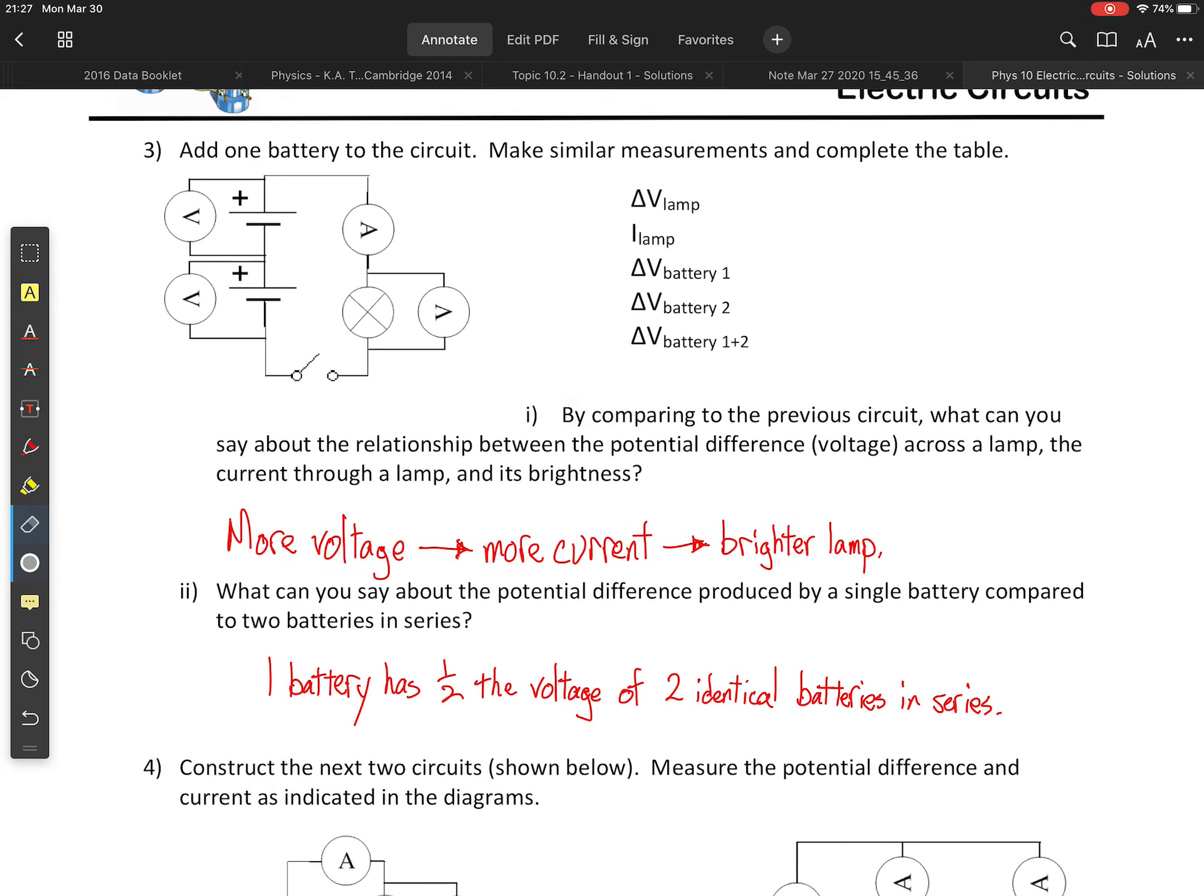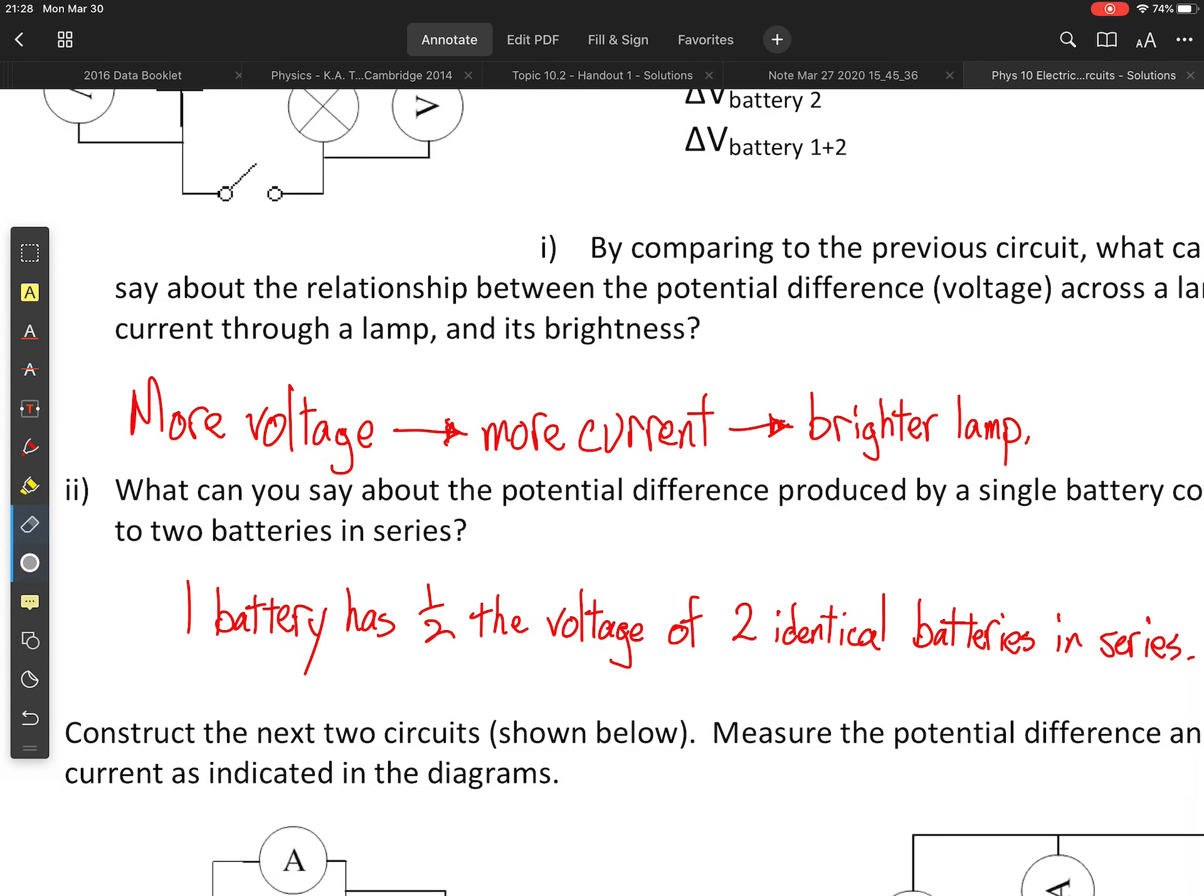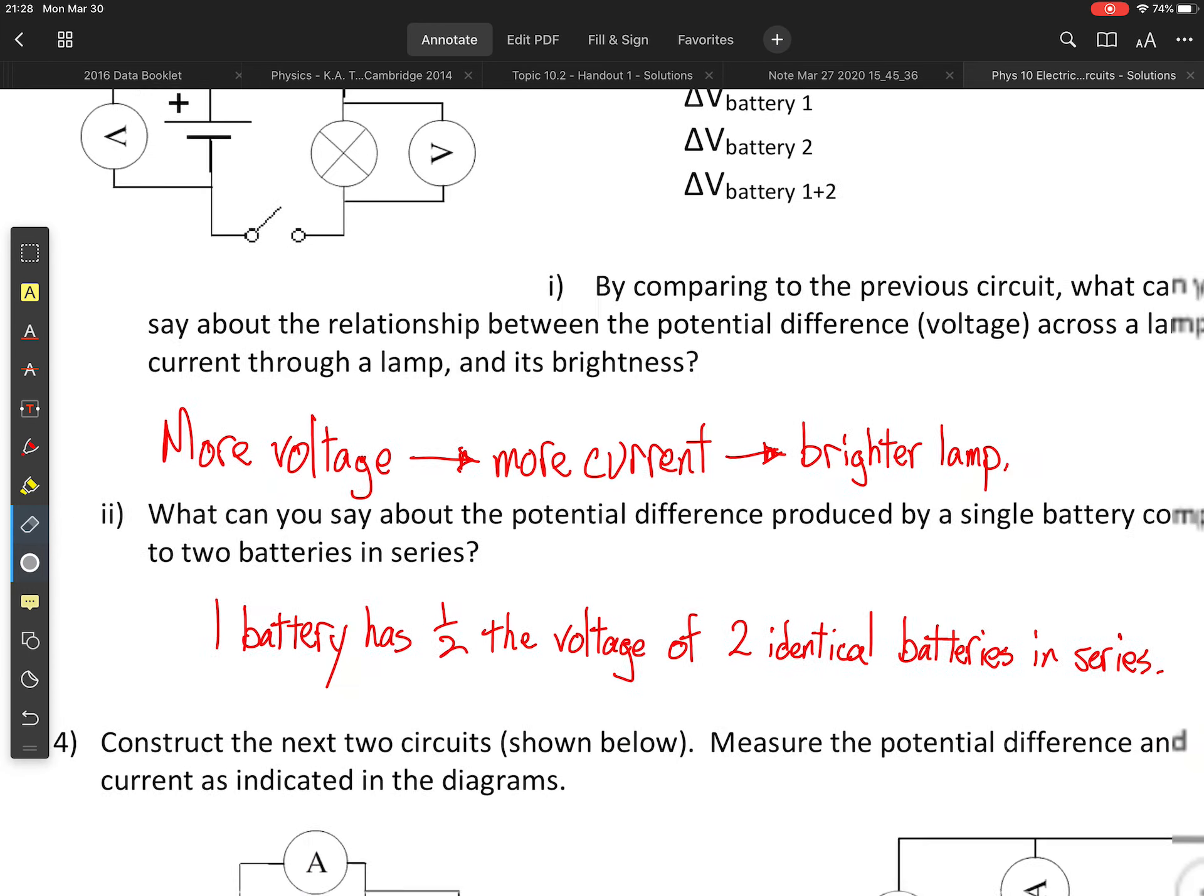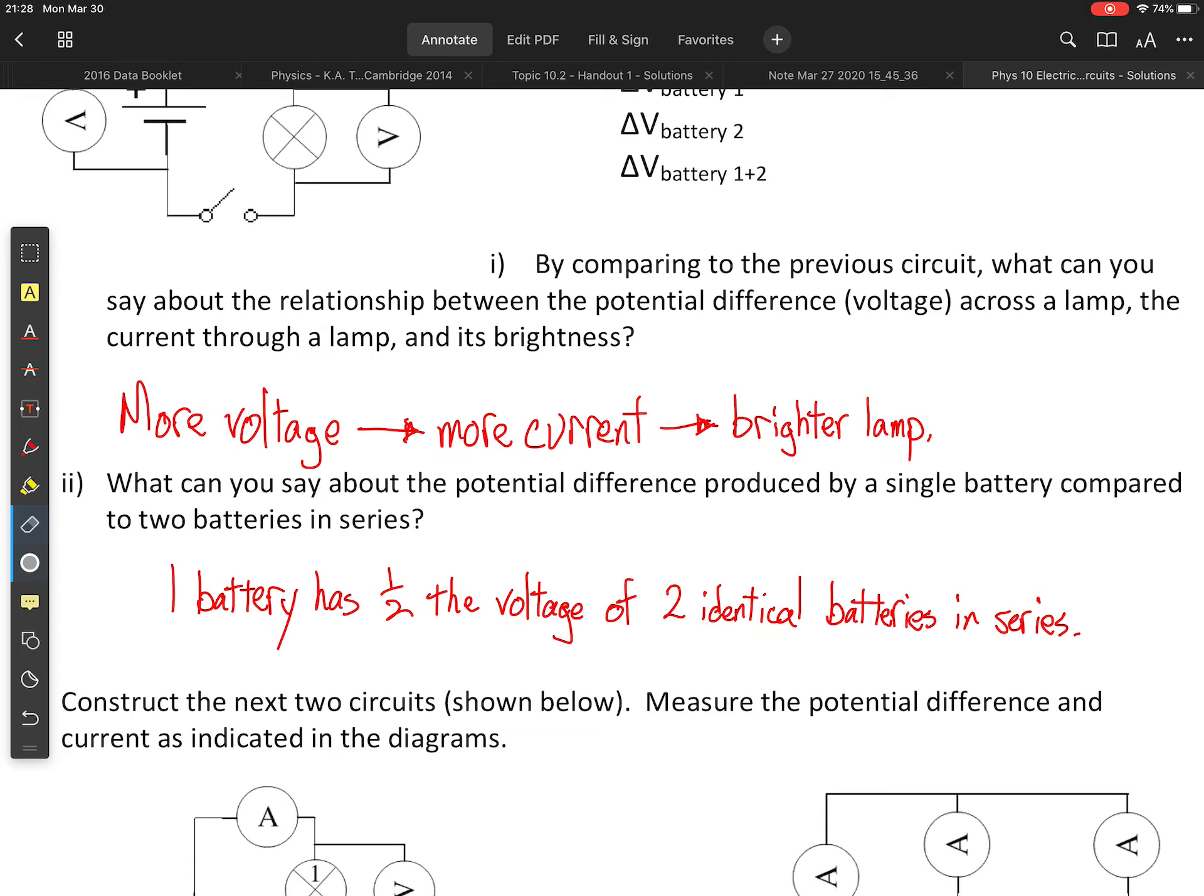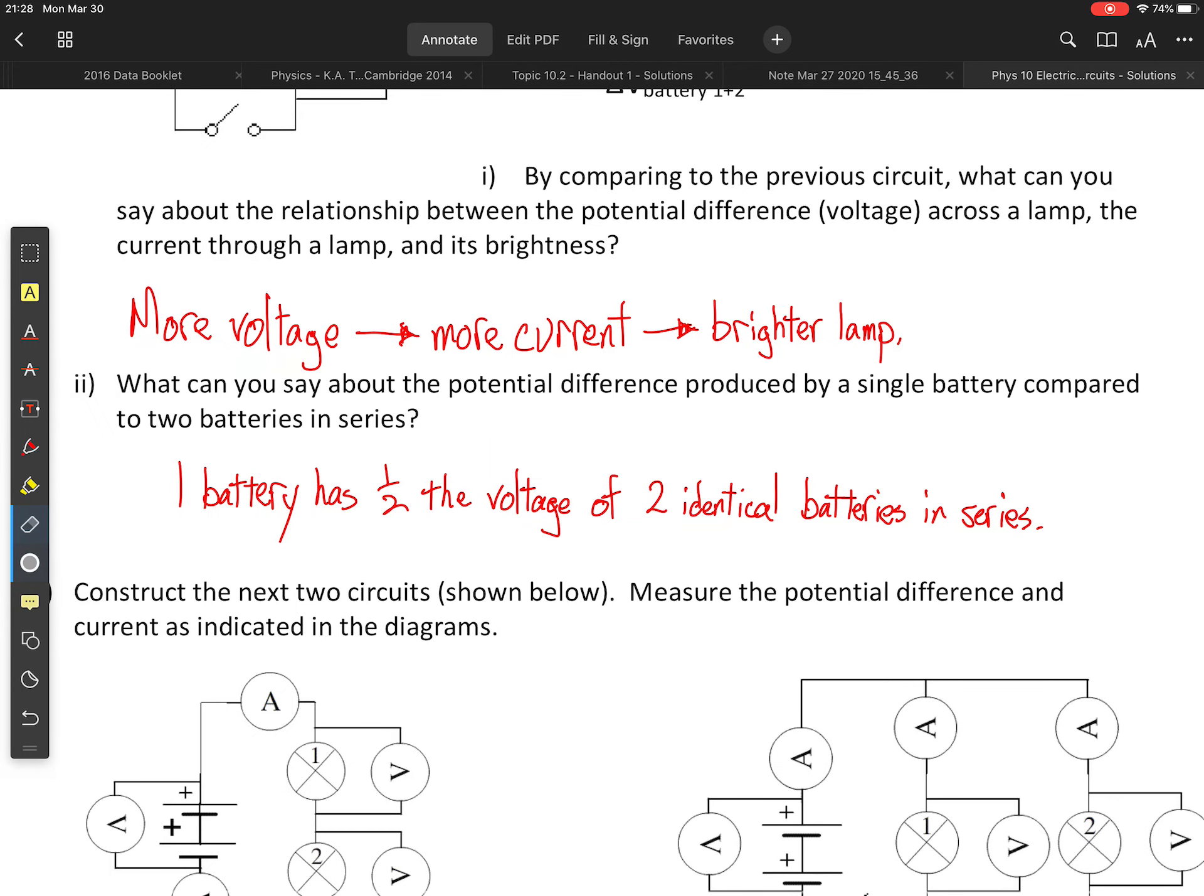Okay, we're asked to add a battery to the circuit and make more measurements. I've not completed the table here, that would be up to you, but what you should find is that more voltage, because you now have two batteries in series, means more current, and that in turn will mean a brighter lamp, and all this makes sense. Okay, so more current, more charge flowing, and remember that our voltage is energy per charge, so more energy to be dumped off onto that lamp. Okay, what can you say about the potential difference produced by a single battery compared to two batteries in series? One battery, in this case, will have one half the voltage of two identical batteries in series. Okay, makes sense.